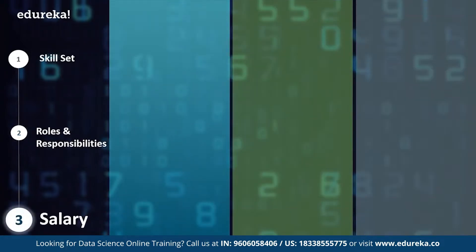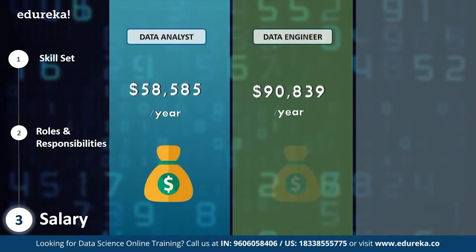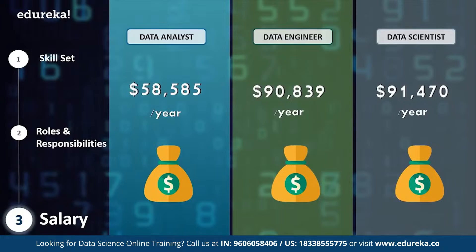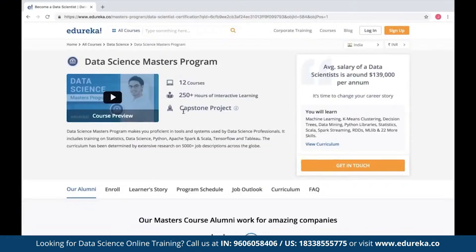Let's look at how much you can earn in data analytics, data engineering, or data science. The typical salary of a data analyst is just under $59,000 per year. A data engineer can earn up to $90,839 per year, whereas a data scientist can earn up to $91,470 per year. Delving deeper, a data scientist can earn 20 to 30% more than an average data engineer, and job postings from companies like Facebook and IBM show salaries up to $136,000 per year.